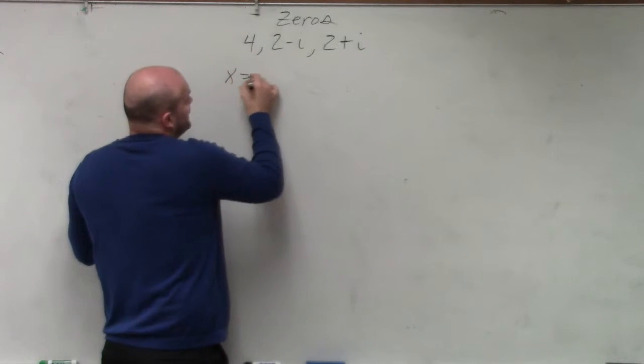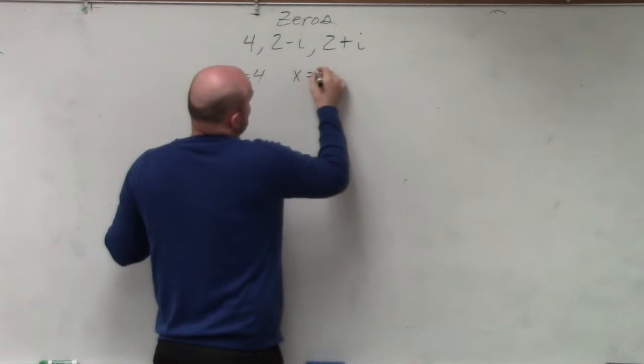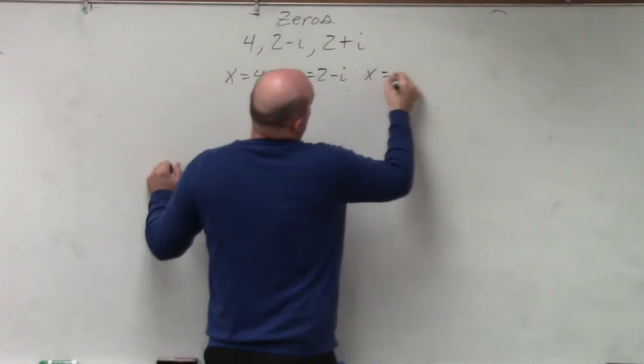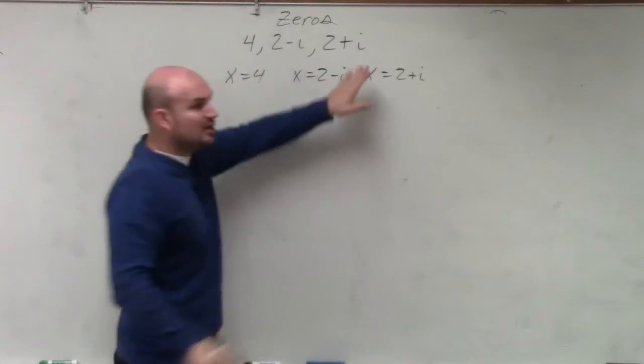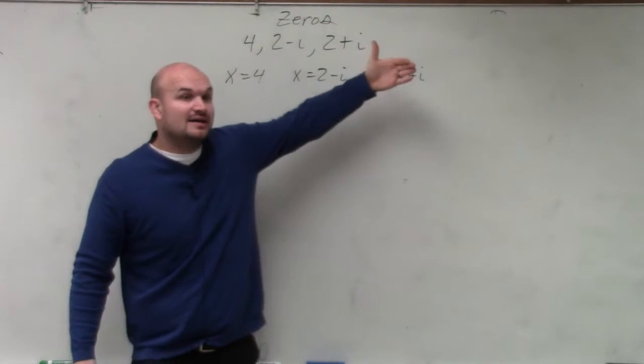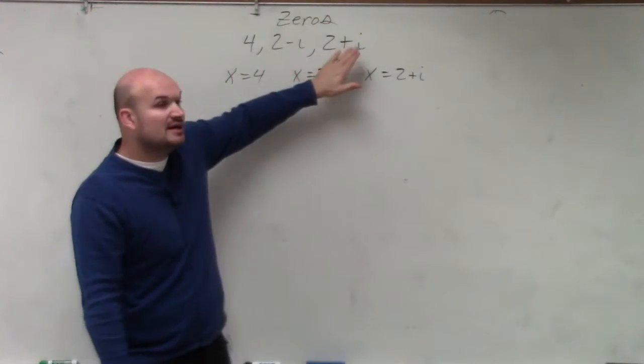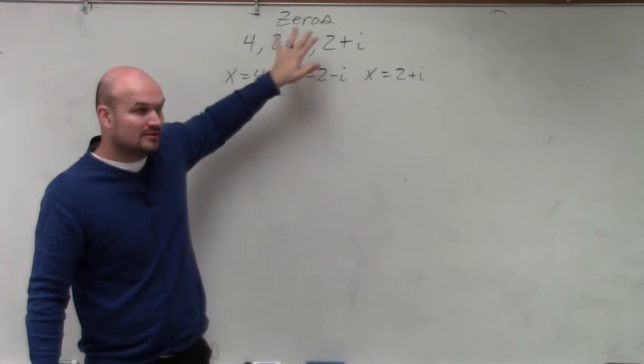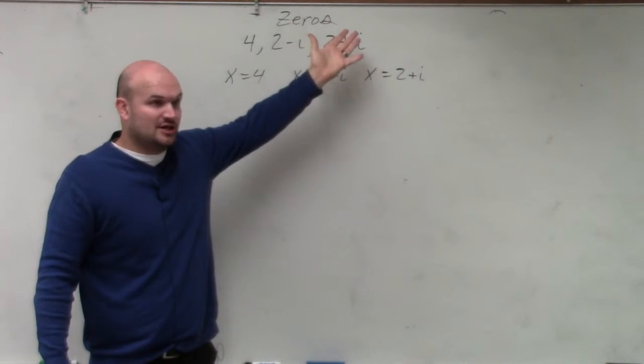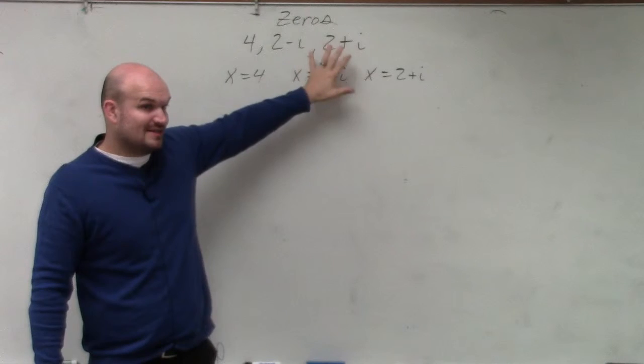We have the zeros. We set each of our zeros equal to x. Remember, complex zeros have conjugate pairs. If you have i, then you have to have negative i. If you're given negative i, you have to have positive i. It doesn't matter if it's a binomial or a monomial, or if it's a complex or just an imaginary unit. You always have to have the conjugate pairs.